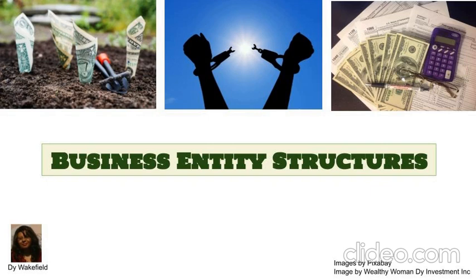Number five: Limited Liability Company, or LLC. It is set up to protect the owner's personal assets from the risk of being seized by creditors who come after the company. There are many ways it can be formed: as a single-member LLC, a multi-member LLC partnership, an LLC C Corporation, or an LLC S Corporation.